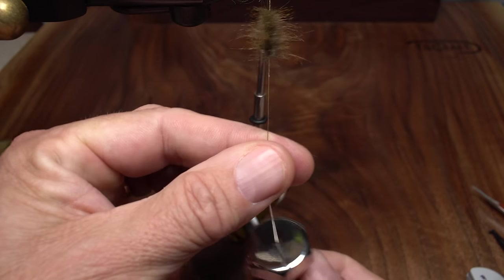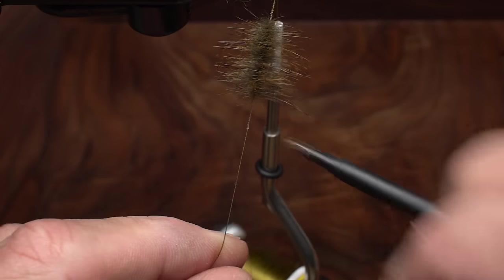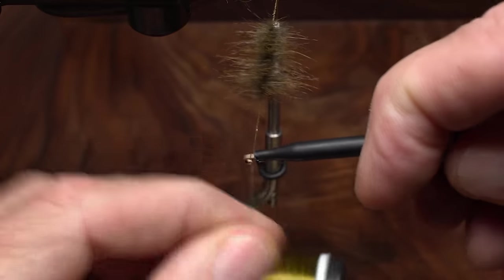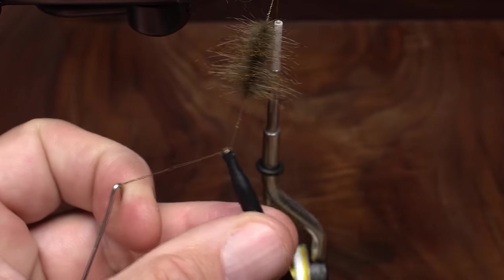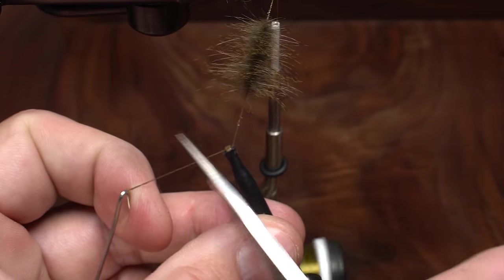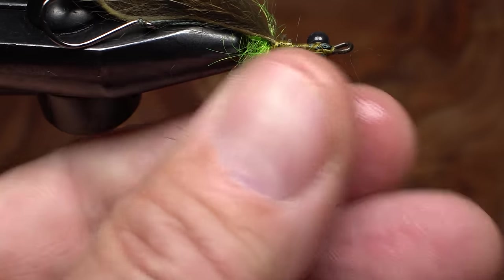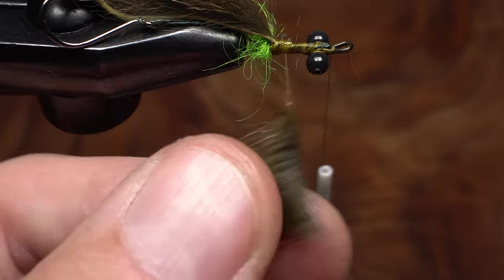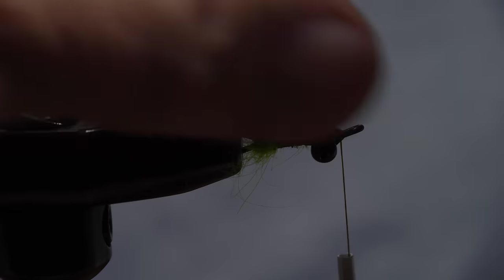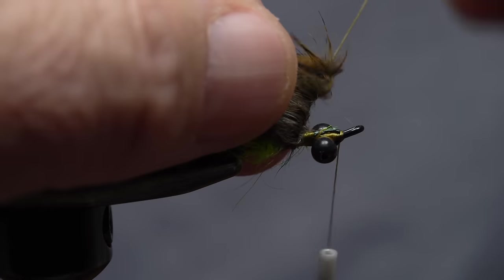Use the same technique as before to secure the bottom end of the loop in plunger style hackle pliers, thus allowing you to snip the bottom end of the loop and the dubbing whirl free. Wet your fingertips and preen the pine squirrel back. Then, start taking touching wraps with it up the shank, preening as you go.